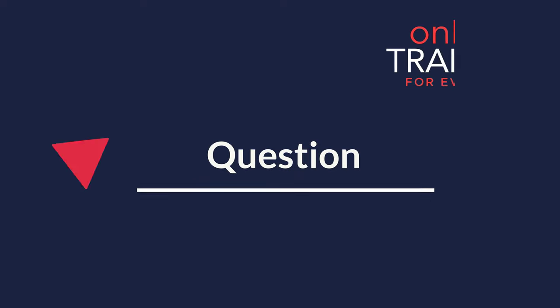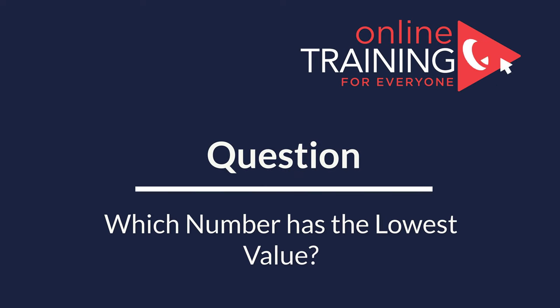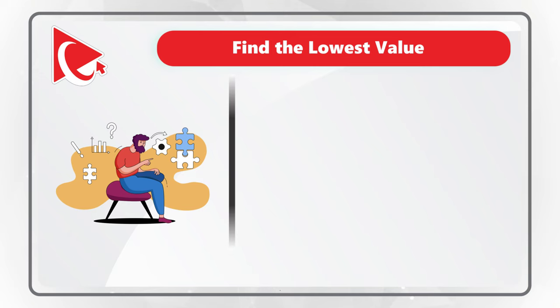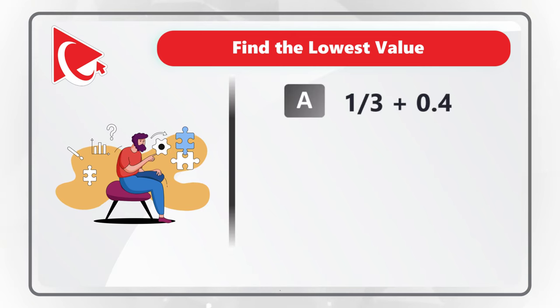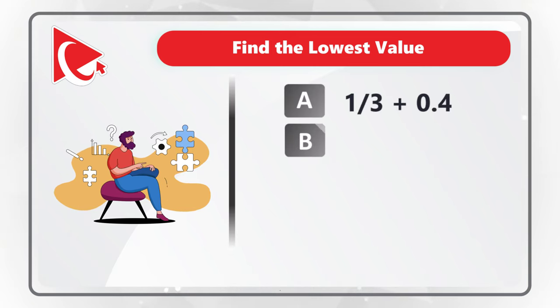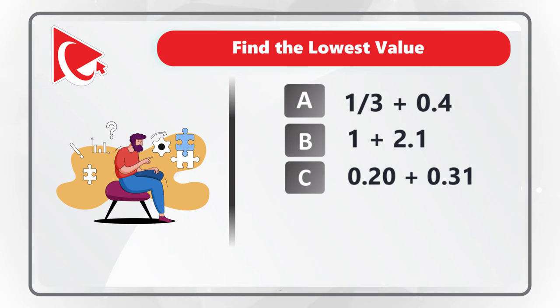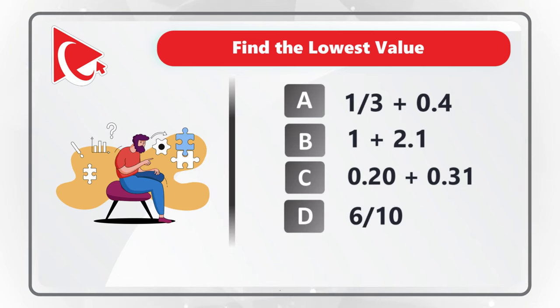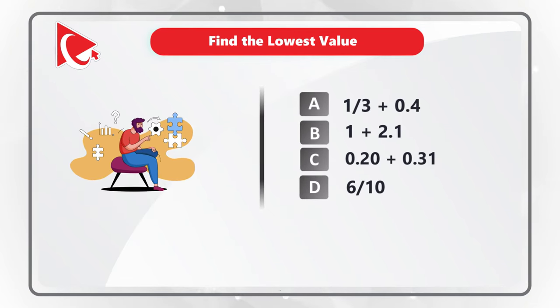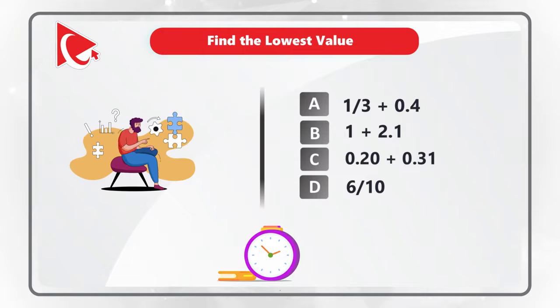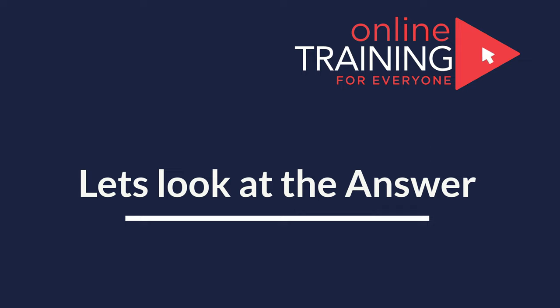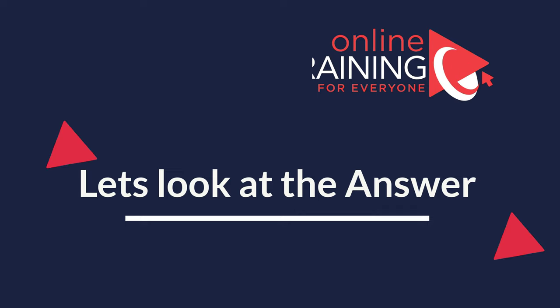I love this question because it truly makes you think to determine the final answer. You need to determine which number has the lowest value, and you have four different choices: Choice A, 1 third plus 0.4; Choice B, 1 plus 2.1; Choice C, 0.2 plus 0.31; and Choice D, 6 tenths. Give yourself a few seconds to see if you can come up with the solution.